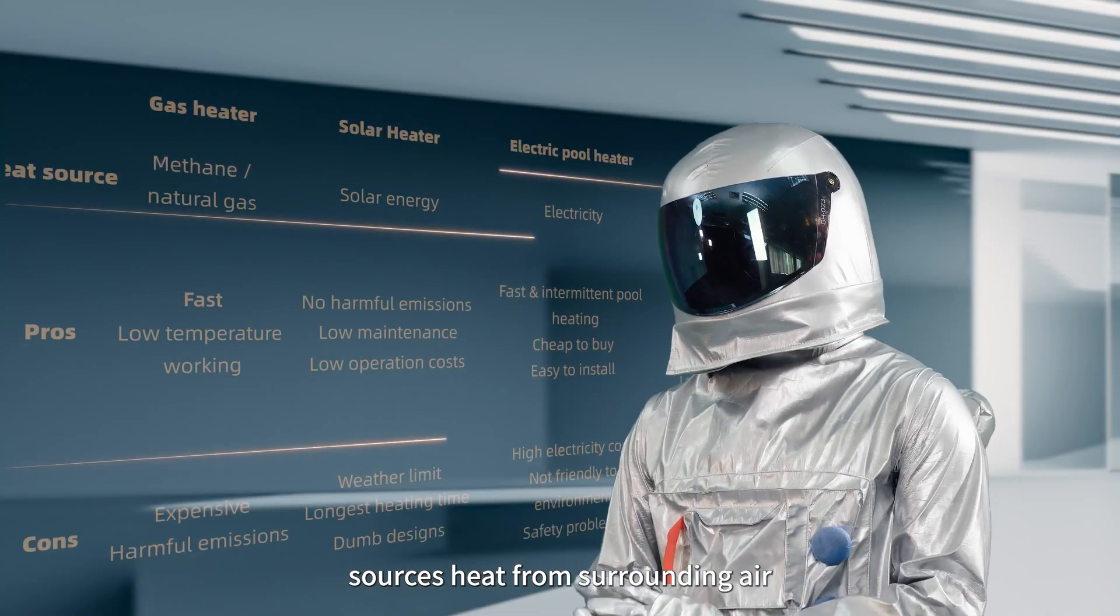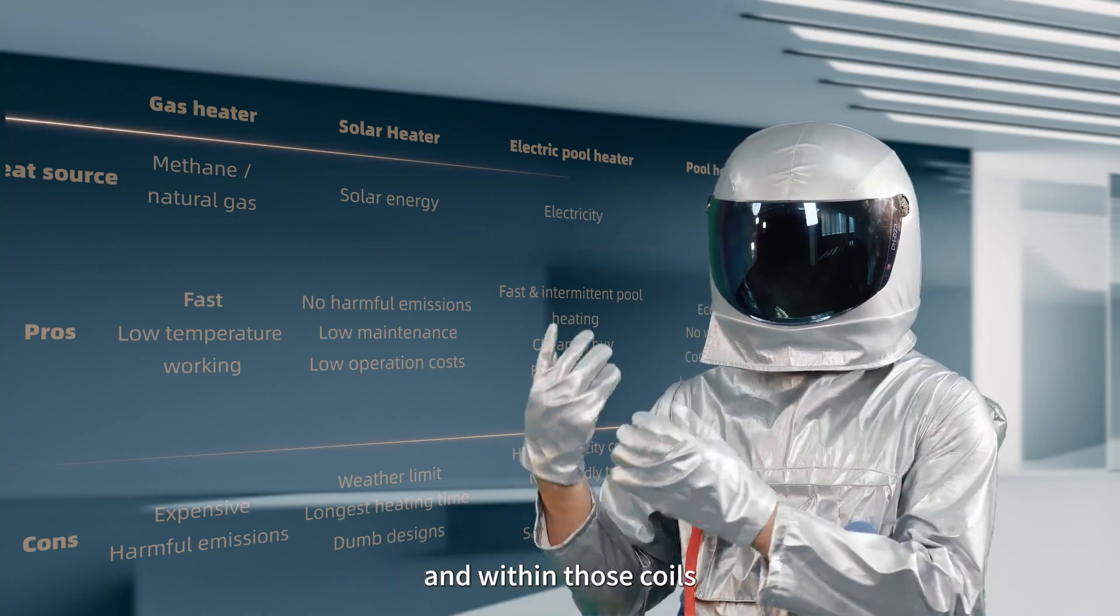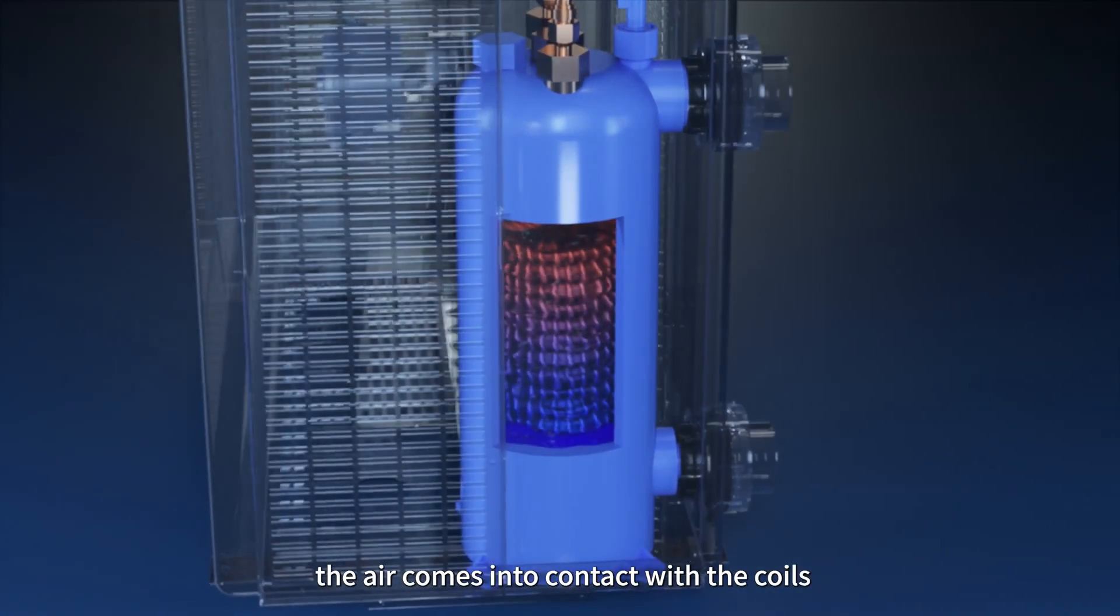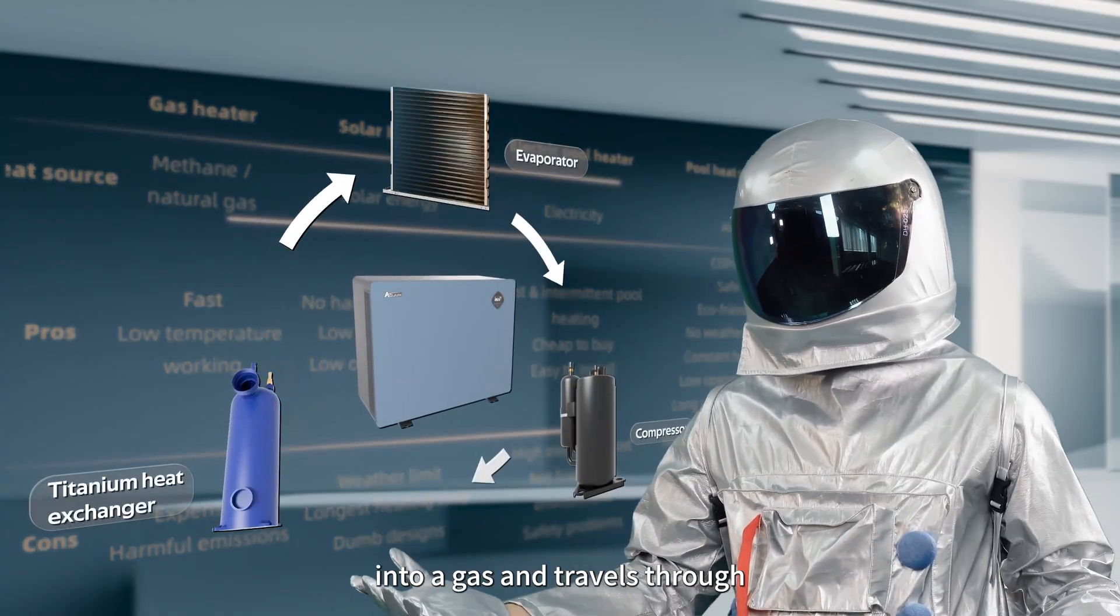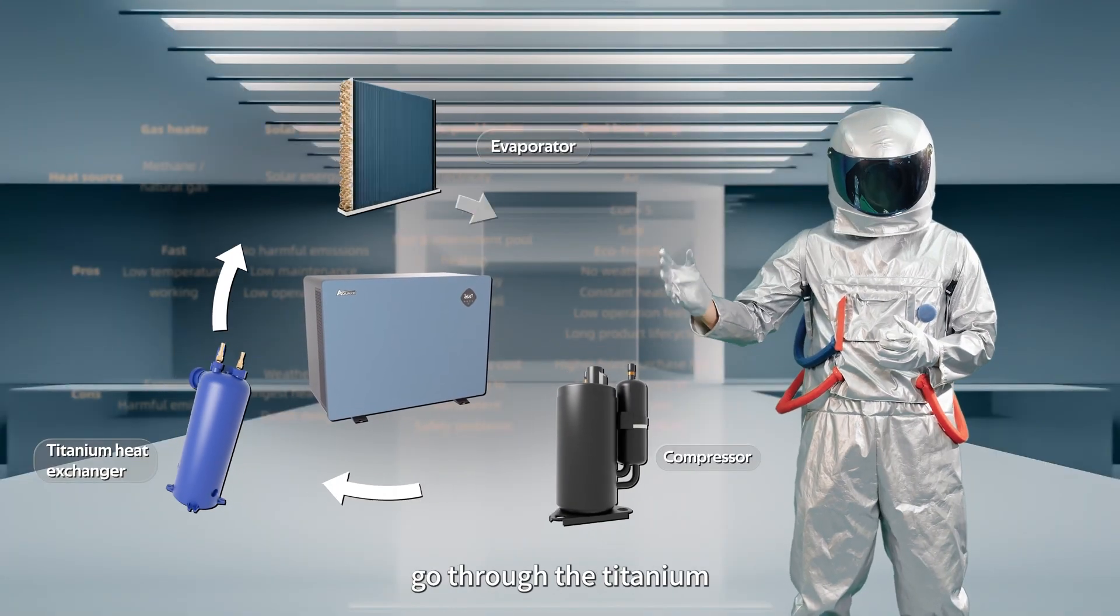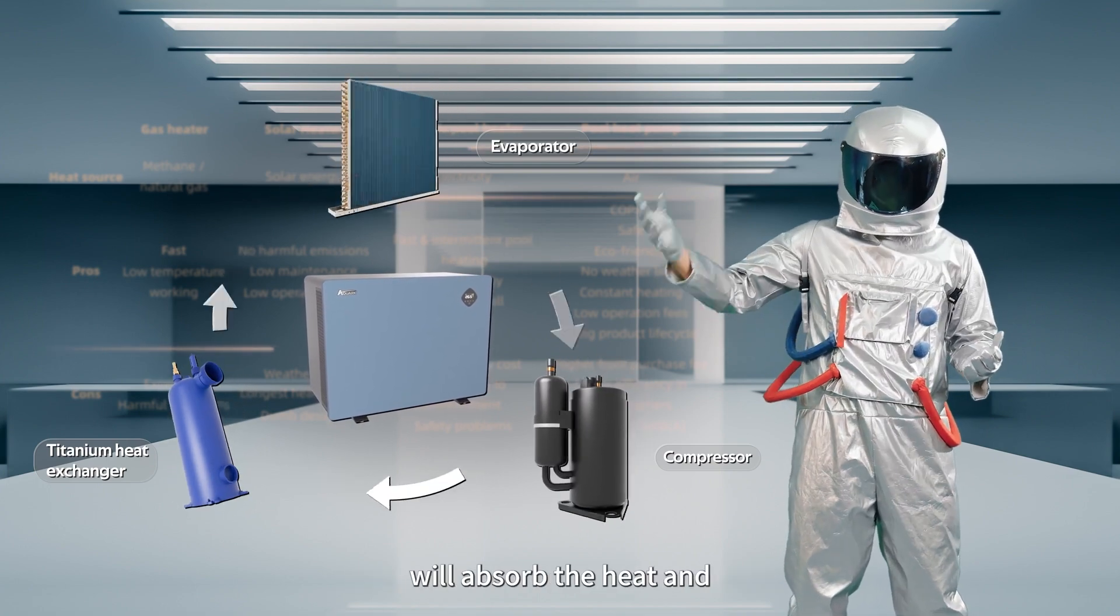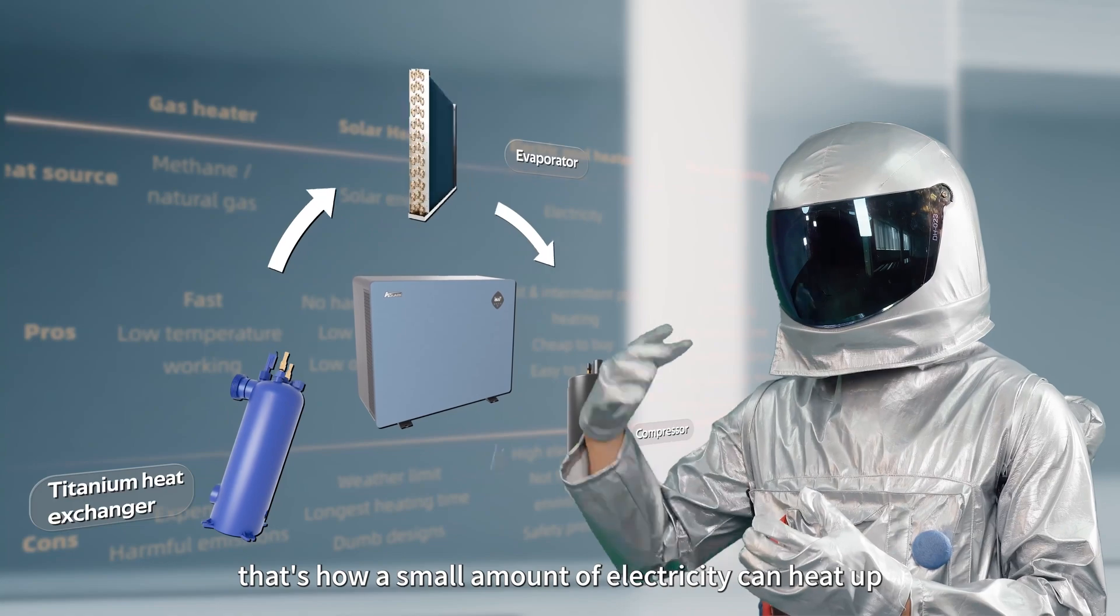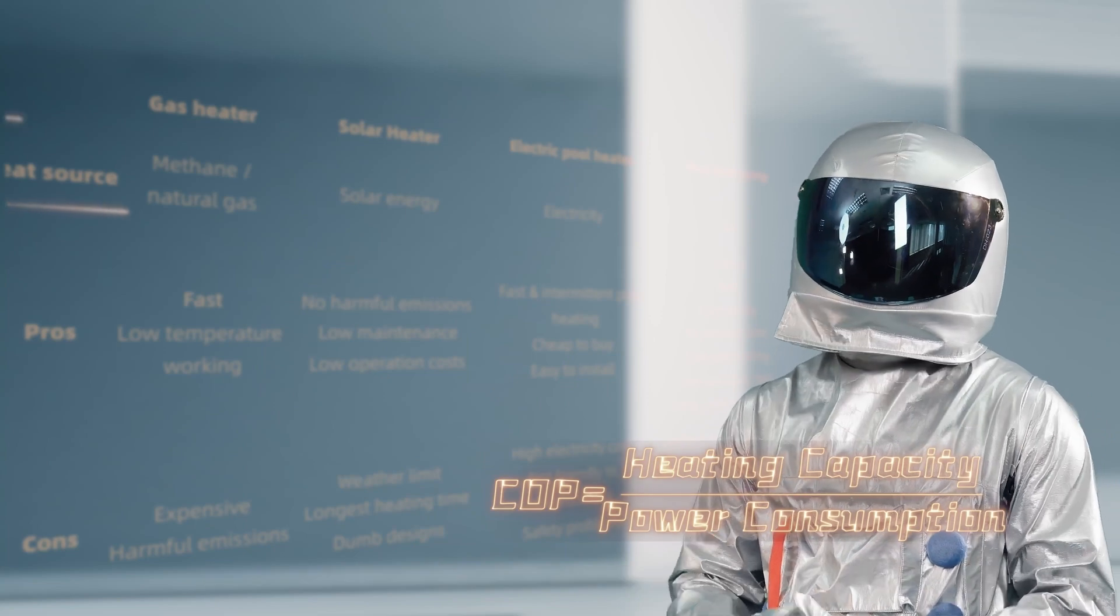Pool heat pump sources heat from surrounding air and transfers it to the water. Inside the heat pump are copper coils and within those coils is the refrigerant R32. When heat that is pulled from the air comes into contact with the coils, the liquid refrigerant turns into gas and travels through a compressor to become high pressure, high temperature gas. The gas refrigerant goes through the titanium heat exchanger inside. Pool water around the copper coils will absorb the heat and its temperature therefore increases. You see, that's how a small amount of electricity can heat up a pool, and that's why pool heat pumps have a relatively high COP of around 5.